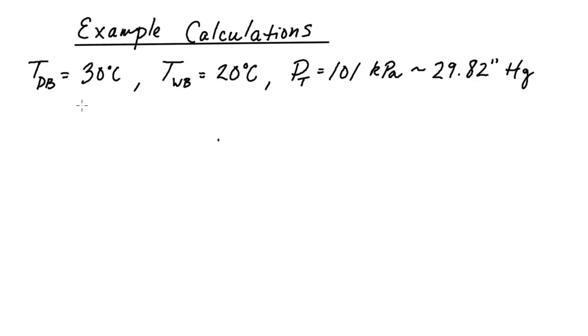The first thing we're going to do is get our temperatures in Kelvin. They're in Celsius right now but we're also going to need them in the absolute temperature scale. To go from degrees C to Kelvin we add 273.15, so our dry bulb temperature is 303.15 Kelvin and our wet bulb temperature is 293.15 Kelvin.